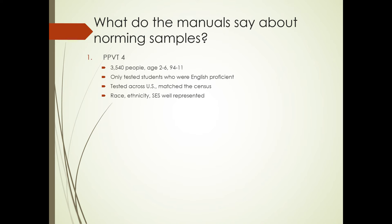So what do the manuals say about norming samples? The PPVT-4 was normed on over 3,000 people from age 2.5 to 94 years, 11 months. So that seems like a very reasonable number of people per age group. However, they only tested students who were English proficient. So those of you who are using it with English learners will have to be very cautious in not using the norms for the test, but rather describing the kinds of words that your student knew or did not know.